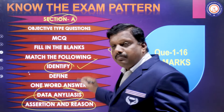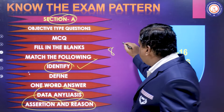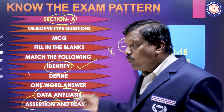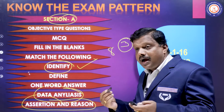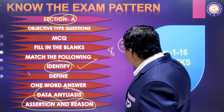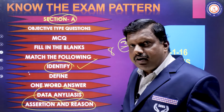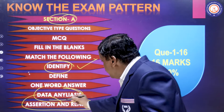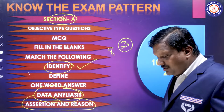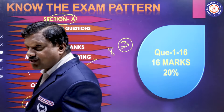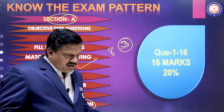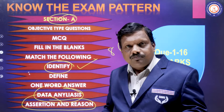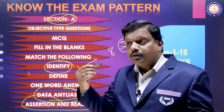For 'identify,' three identification clues will be given and you have to say what the thing is — for example, identify the soil. For 'data analysis,' this is a question from economics; for example, per capita income of some countries will be given and you have to analyze the data according to the question.